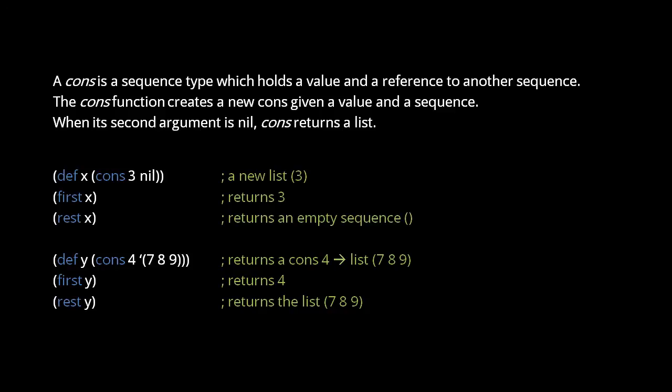7, 8, 9. Calling first on a cons returns its held value, and calling rest on a cons returns its referenced sequence.